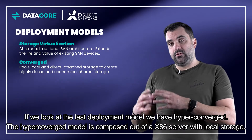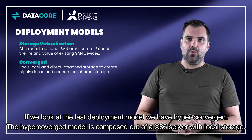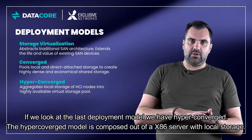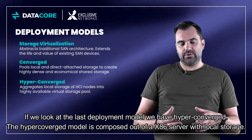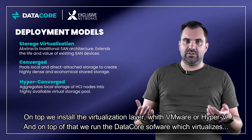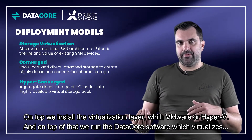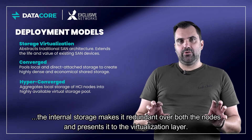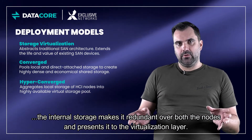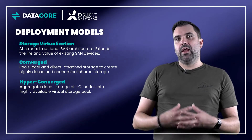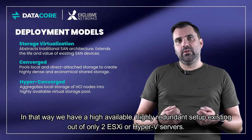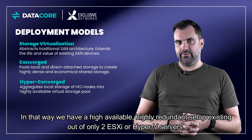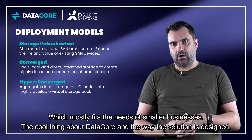If we look at the last deployment model, we have the hyperconverged. The hyperconverged model is composed of x86 servers with local storage. On top, we install a virtualization layer — whether it be VMware or Hyper-V. On top of that, we run the DataCore software which virtualizes the internal storage, makes it redundant across both nodes, and presents it to the virtualization layer. In that way, we have a highly available, highly redundant setup existing out of only two ESXi or Hyper-V servers, which mostly fits the needs of smaller businesses.